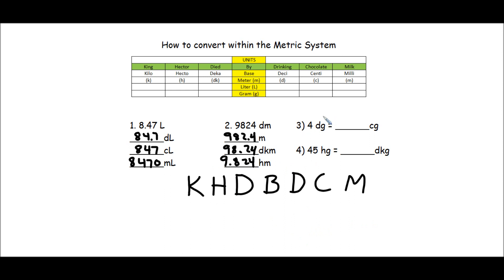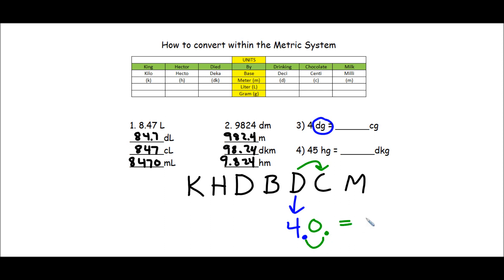In the next two problems, we're just going from one unit to another. Here we have 4 decigrams and we're changing that to centigrams. Write the 4 exactly where it says it goes — under decigrams. Remember, your decimal in a whole number is to the right. I'm going to move one space to the right. Don't forget to fill in the empty space with a zero. So my new number is 40, which means there are 40 centigrams inside of 4 decigrams.